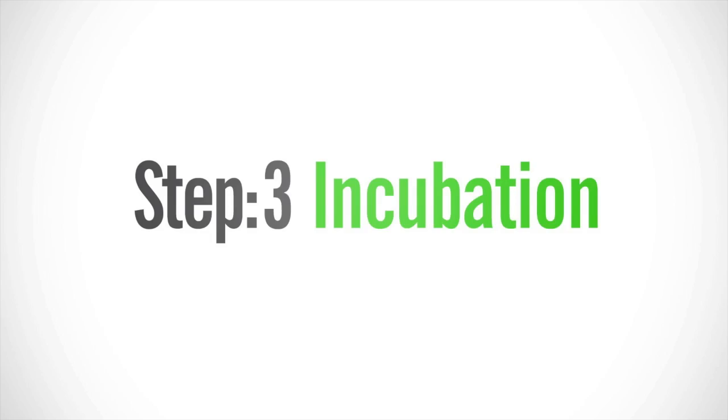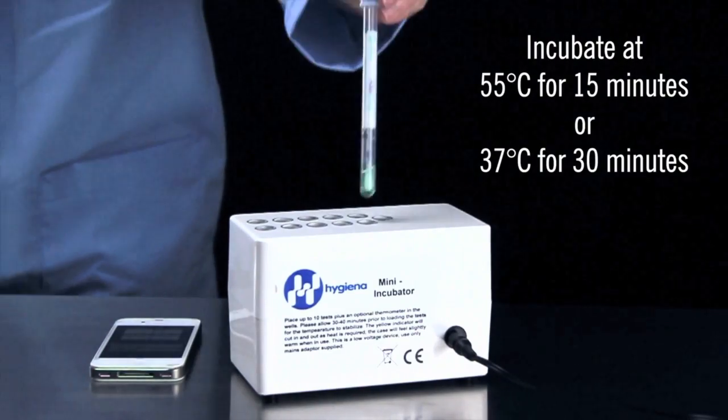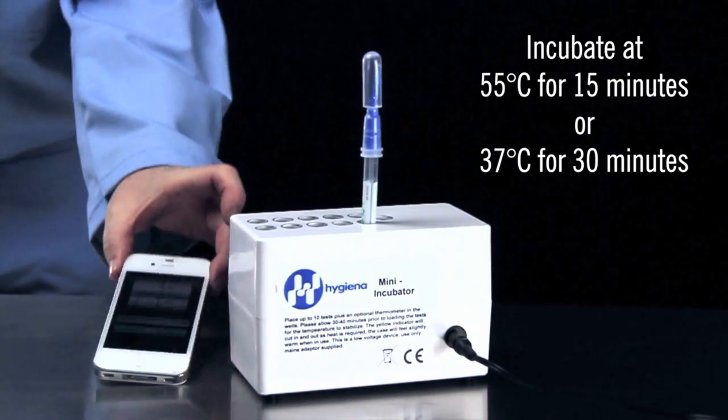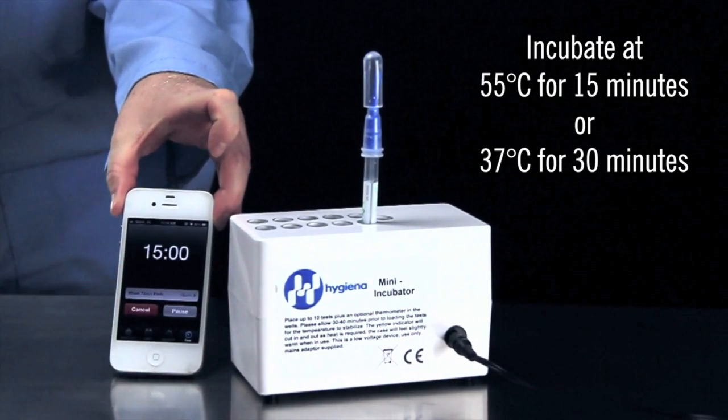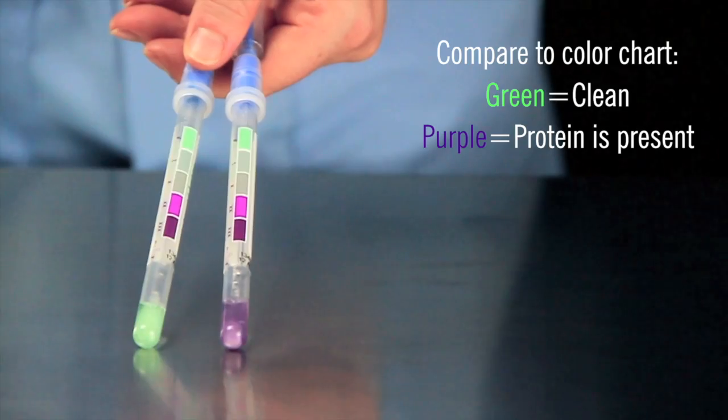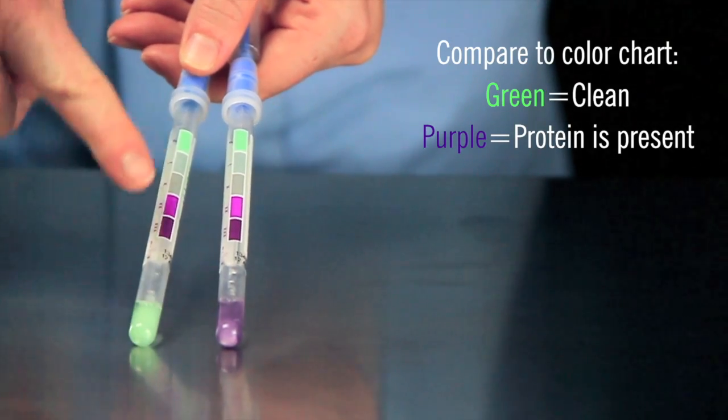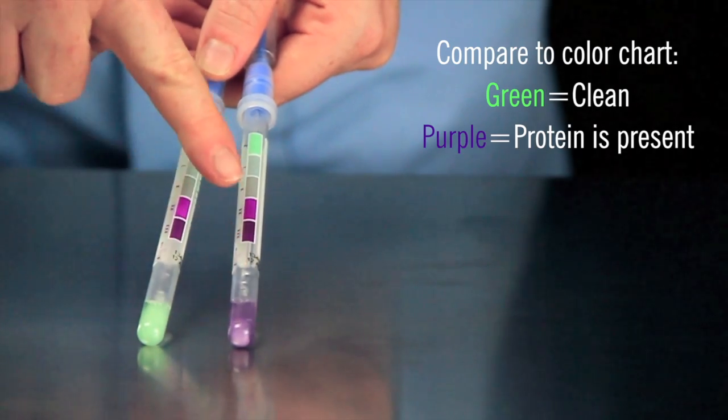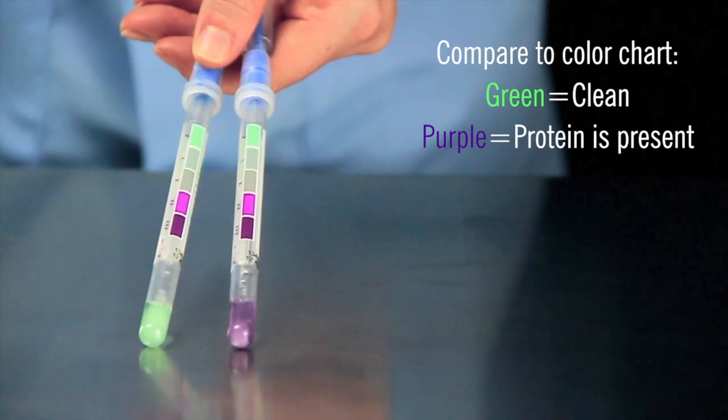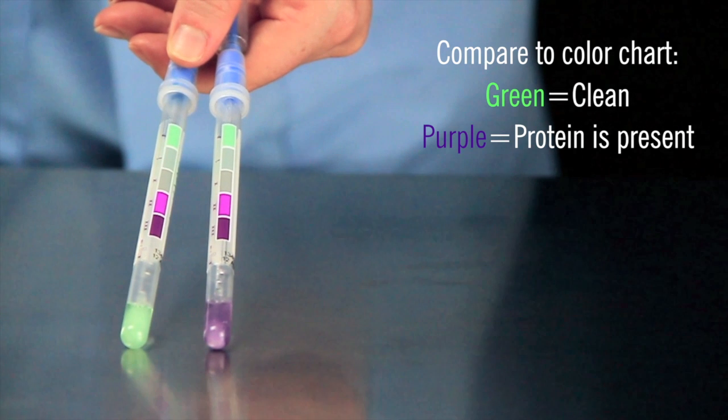The third step is incubation. Incubate the test device for 15 minutes at 55 degrees Celsius or 30 minutes at 37 degrees Celsius. When the time is complete, compare the color of the liquid against the color chart on the Allersnap label. Green means clean, purple means potential allergens are present.